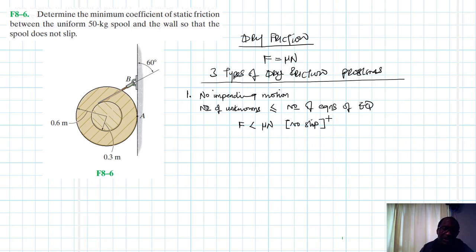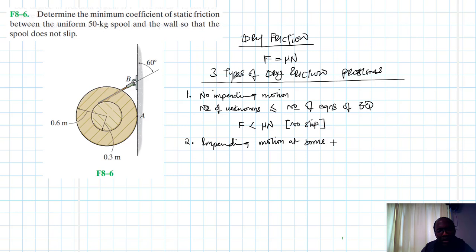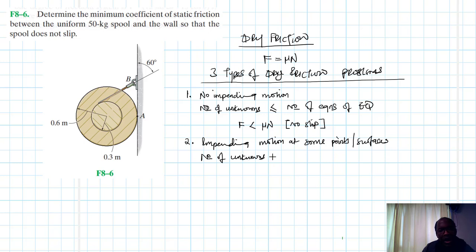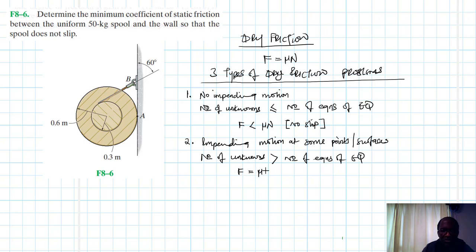The second type of problem is where we have impending motion at some contacting points or surfaces. In this case, the number of unknowns is more than the number of equations of equilibrium, so we employ the friction equation F equals mu times N.